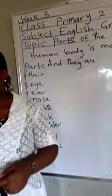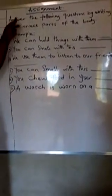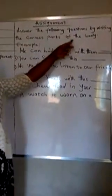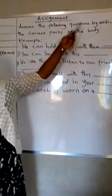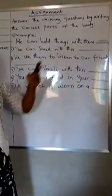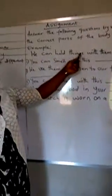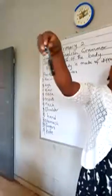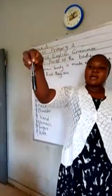Now I am going to give you some assignments on this topic. The instruction is: answer the following questions by writing the correct parts of the body. For example: we can hold things with them. What part of our body can we use to hold things? I am using my fingers. So the answer is fingers.